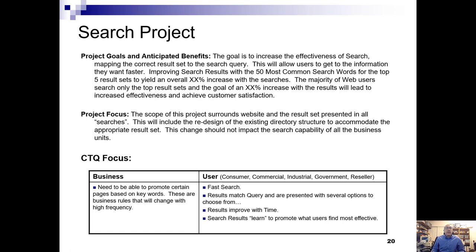The search results will be improved based on keywords. These are business rules that will change with high frequency. For the users, there were initially 11 different types of user groups that we segmented down to five to make it easier for our measurement and analysis.